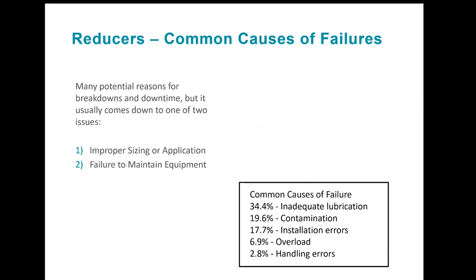What can cause a failure in a gear reducer? Mechanical failures are a concern with any application because when systems go down, it results in lost productivity and by extension money. Like all rotating equipment, there are many potential reasons for breakdowns and downtime, but it usually comes down to improper sizing of the application or failure to maintain the equipment. As shown here, 34.4% of common failures are due to inadequate lubrication, 19.6% contamination, 17.7% installation errors, 6.9% overload, and 2.8% handling errors. Oil analysis falls under the umbrella of equipment maintenance.